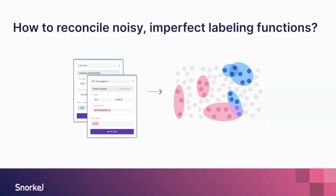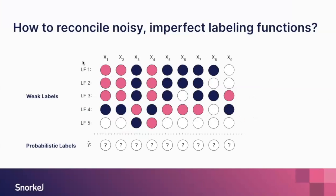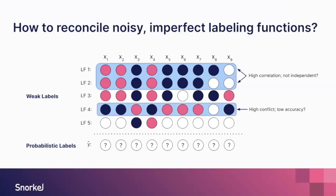The key point is that these labeling functions cover only part of the data, can conflict, and are noisy — they're not perfect. Each oval in the diagram represents a sample labeling function covering part of the data, sometimes overlapping. Each data point gets a vote from different labeling functions — a weak label. These functions can be correlated, have high conflict indicating low accuracy, or have low coverage but high accuracy. There can be lots of variation in how labeling functions vote.